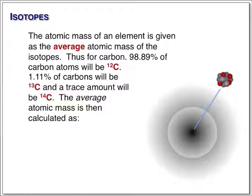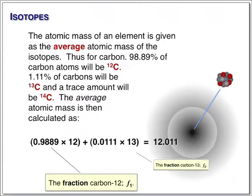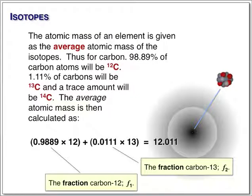We can take the percentage, that is the natural abundance, and the mass of the carbon, and we can multiply them together like this, add the two together, and we generate the average atomic mass of carbon.